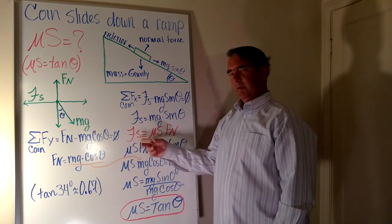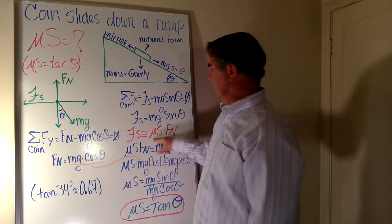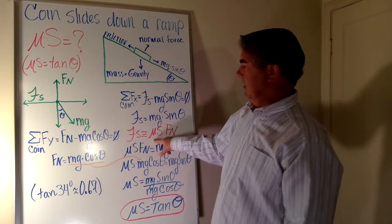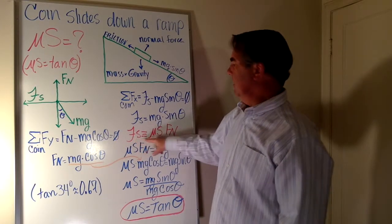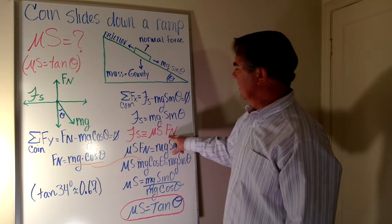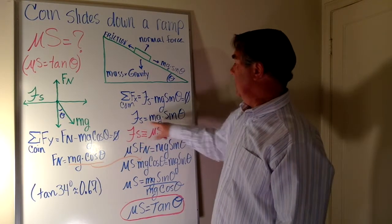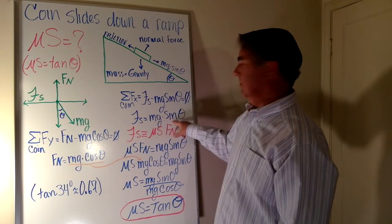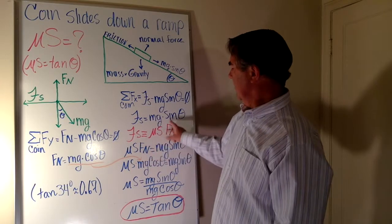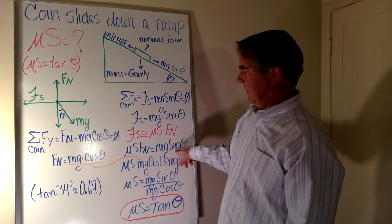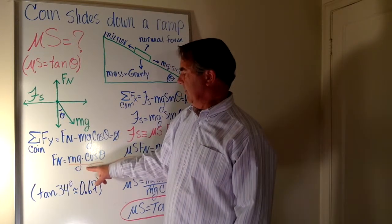By definition, the force of static friction is the coefficient of static friction times the normal force — mu_s times F_N. This comes straight from the physics textbook. So substituting: the force of static friction equals mg sine theta, meaning the coefficient of static friction times the normal force equals mg sine theta. The normal force also equals mg cosine theta.